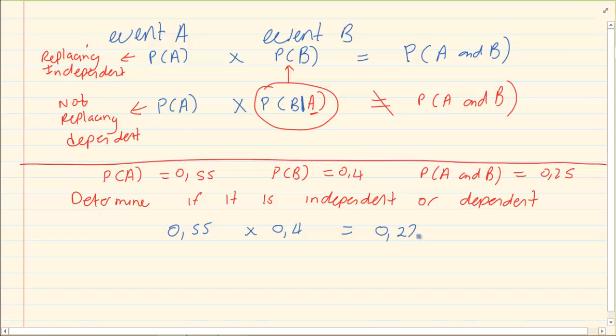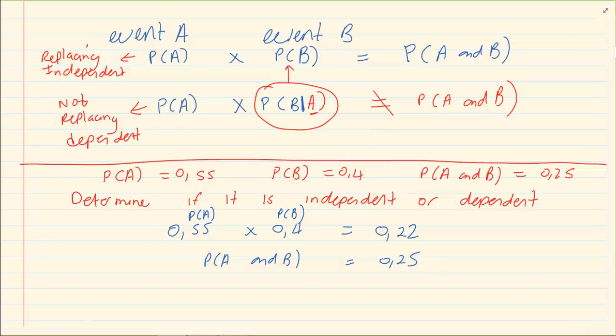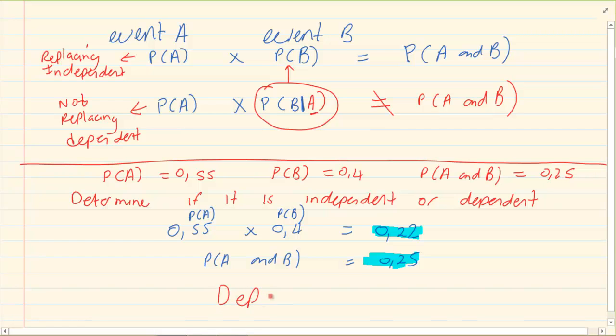0.22. Now they told me that P of A and B, this was P of A and this was P of B. Now they told me P of A and B is equal to 0.25. Now what do I notice? They are not the same. And as soon as they are not the same, then this becomes dependent.